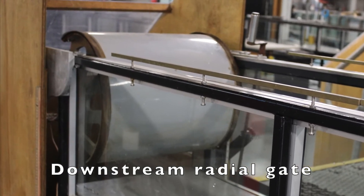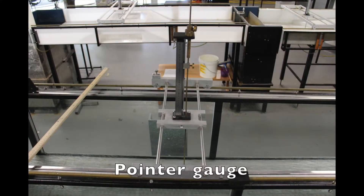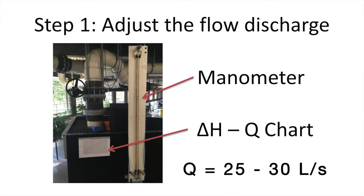Both gates will initially be set open in the experiments. Water depths will be measured throughout the experiment using a pointer gauge which can be traversed along the channel. The pointer gauge should read 0 on the channel bed. Where unsteady surface perturbations mean the water surface is not constant, the average surface water level at that point should be recorded. The first step is to set the flow rate to between 25 to 30 litres per second using the flow gauge located at the upstream end of the channel. A constant headwater reservoir is located at roof level and the flow from that reservoir into the channel is controlled by the flow gauge. Using the manometer and delta H to Q calibration chart, the flow discharge rate can be determined.